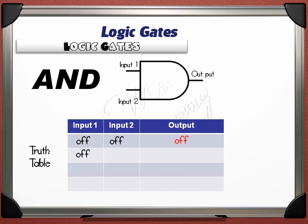If input 1 is OFF and input 2 is ON, the output is OFF, because this is an AND gate and it cannot give an ON output unless both inputs are ON. If input 1 is ON and input 2 is OFF, the output is also OFF. The fourth case — input 1 is ON and input 2 is ON — is the only case that gives an ON output.